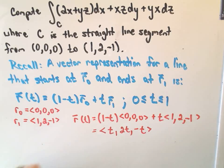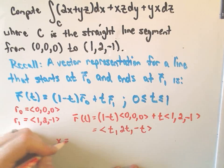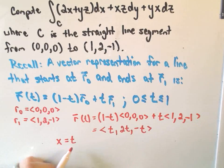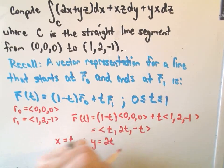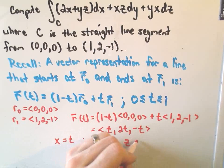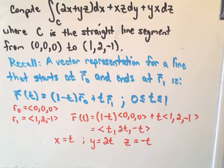Again, t is varying from 0 to 1. So it simply says x has a parametric representation of just t. It says y has the parametric representation 2t. And it says z has the parametric representation of negative t.